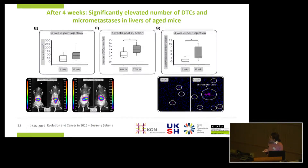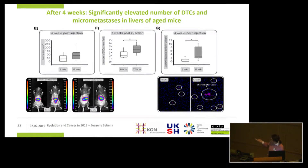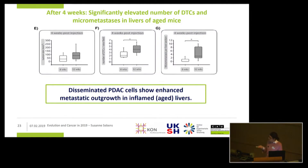Four weeks after tumor cell inoculation, the primary tumors were slightly larger in the aged animals, but most strikingly, in the livers we could detect a higher number of disseminating tumor cells — and most importantly, in these livers we could detect micrometastasis, which was almost absent in the young livers. From these experiments, our conclusion was that the disseminated pancreatic cancer cells show enhanced metastatic outgrowth in the aged, inflamed livers, and that a physiological microenvironment may help to restrain the outgrowth of these cells.